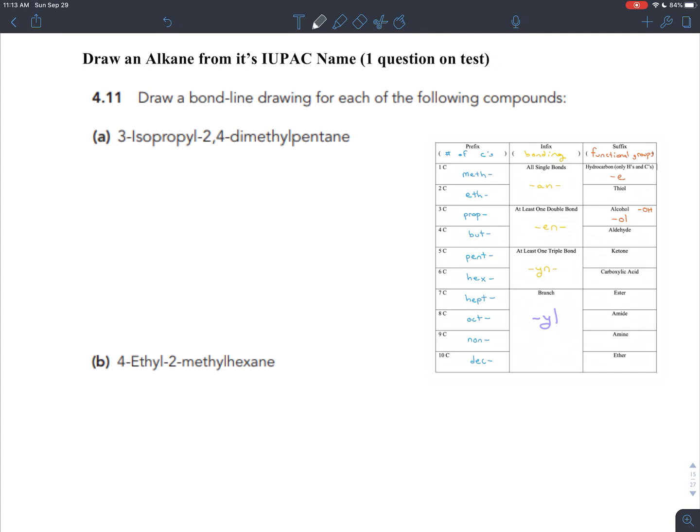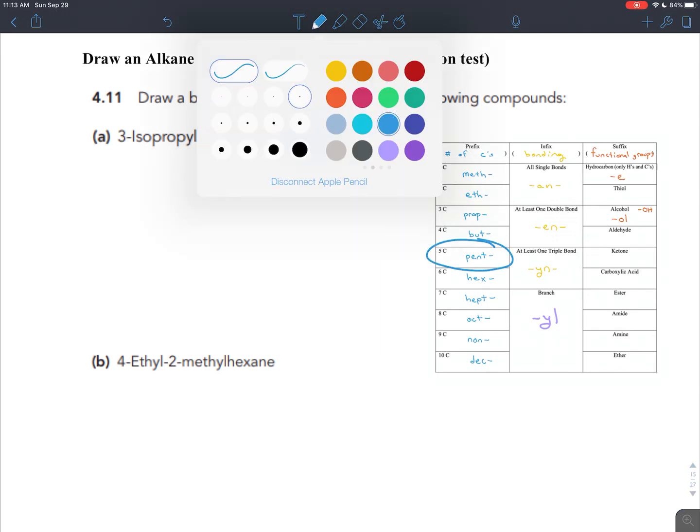In exercise 4.11, they give you the name for an alkane, and they want you to draw the structure of it. It's sometimes a little easier because you get to draw it however you want to, but you always want to start by drawing the backbone. Here, the prefix in our backbone is pent, and that means that we have five carbons.